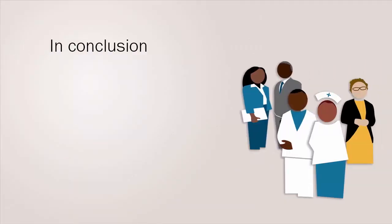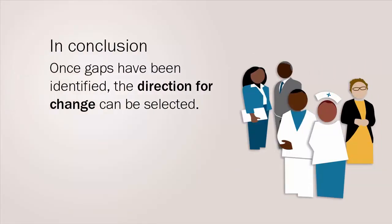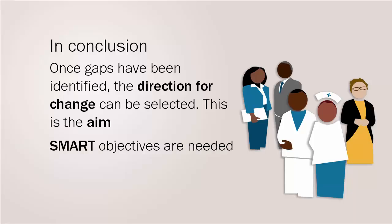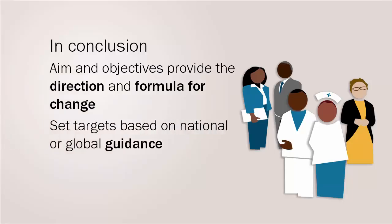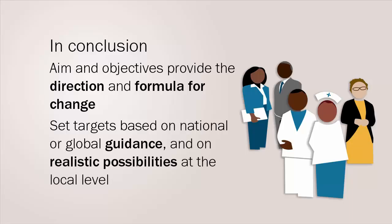In conclusion, once gaps in current eye care services have been identified in the initial stages of the planning cycle, the direction for change can be selected, and this is stated as the aim. To achieve the aim, detailed and SMART objectives need to be put in place. The aim and objectives of a plan provide the direction and the formula for change. Setting targets for change has to be based on national or global guidance and on the realistic possibilities at the local level.